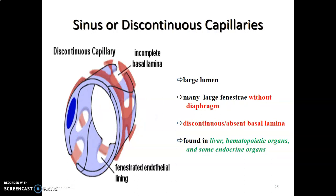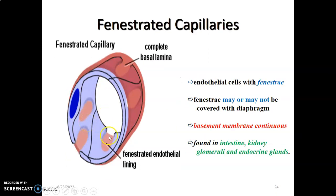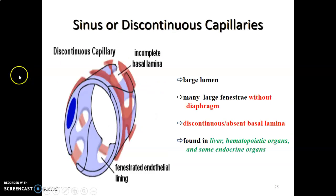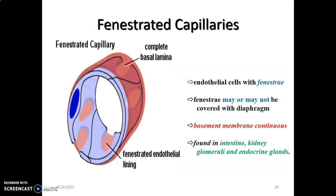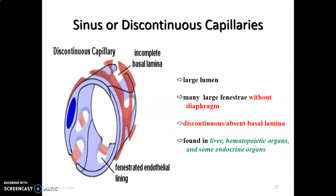The last type is the discontinuous capillaries, also called sinus capillaries. These have a very large lumen, and the endothelial fenestrae have no diaphragm — unlike fenestrated capillaries where fenestrae may or may not have diaphragms. In discontinuous capillaries, all fenestrae of the endothelium lack diaphragms. Also, the basal lamina could be absent or discontinuous, unlike fenestrated and continuous capillaries where the basal lamina is complete.